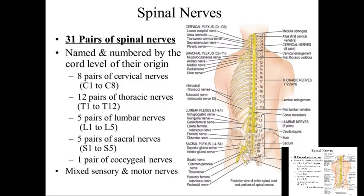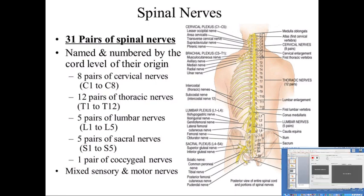There are 31 pairs of spinal nerves: 8 cervical, 12 thoracic, 5 lumbar, 5 sacral, and 1 pair of coccygeal nerves. The instructor pauses here and will make a second video specifically on the plexuses.